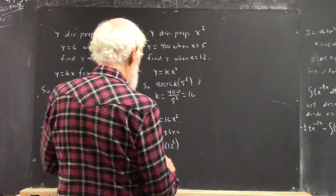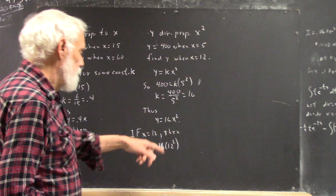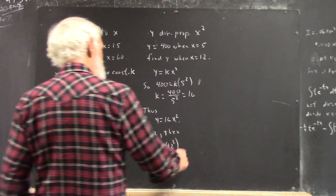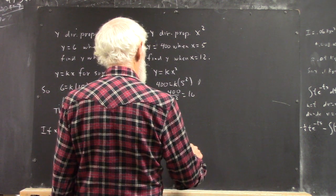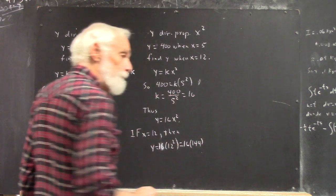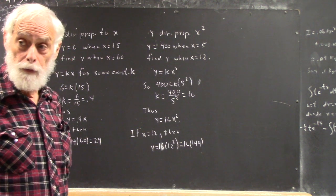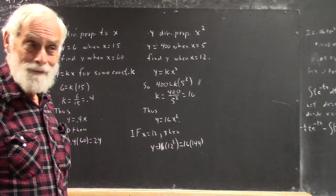So, this k... Now, I know that k is 16... 16 times 12 squared... 16 times 144... Everybody knows what 16 times 144 is, right?